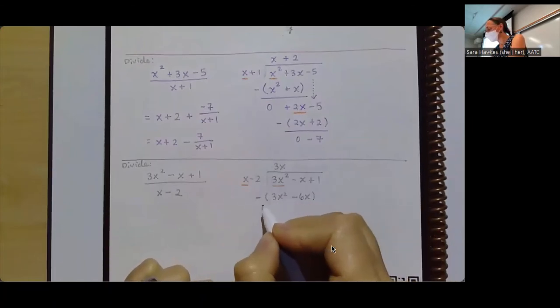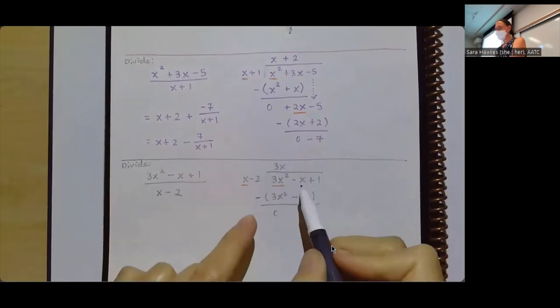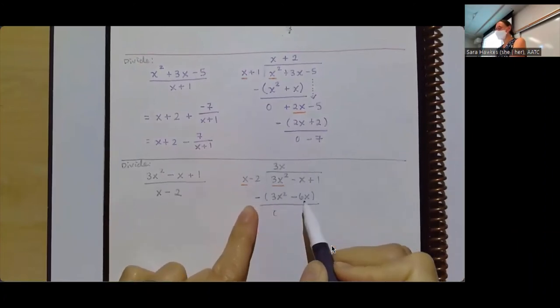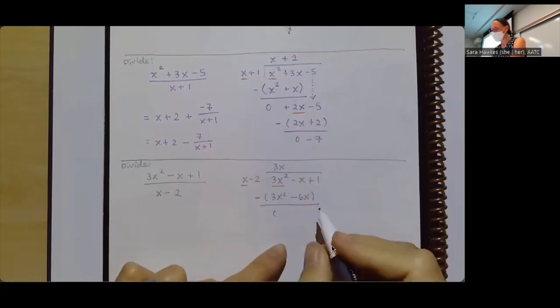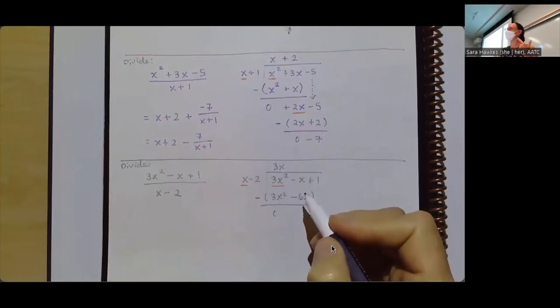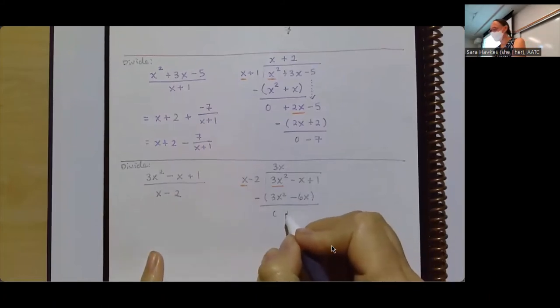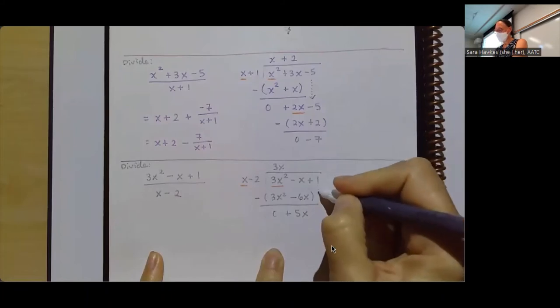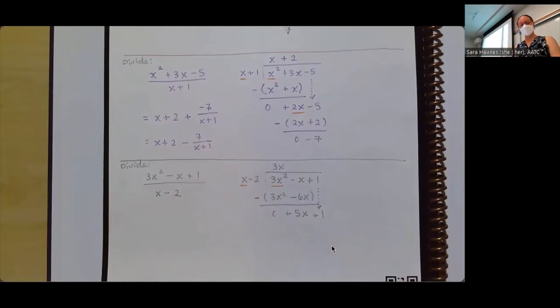Next thing to be careful about is just following those signs as we do the subtraction. So 3x squared minus 3x squared is 0. Negative x minus negative 6x, that minus a negative, if I were to think about distributing that in, that's really like a plus 6x. So I've got negative x plus 6x, so I'm looking at a plus 5x. And then I can bring that one down.